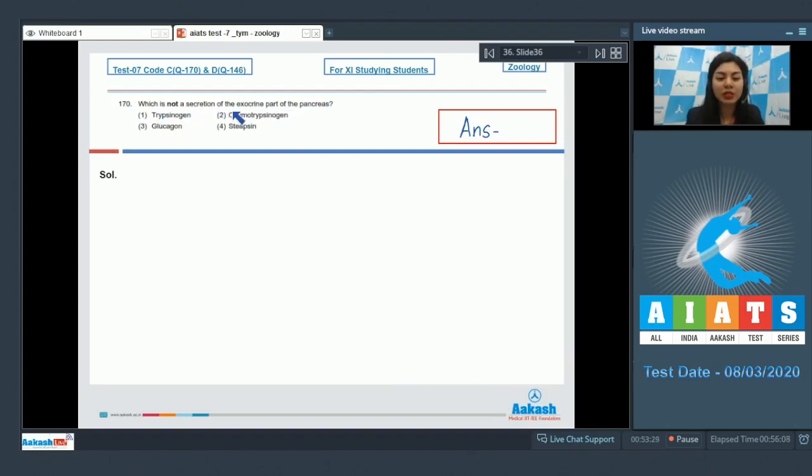Question 170: Which is not a secretion of the exocrine part of the pancreas? Trypsinogen, chymotrypsinogen, or glucagon.